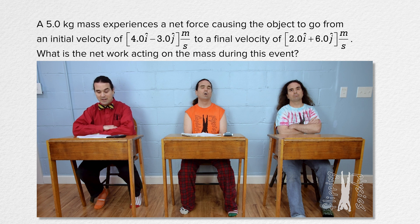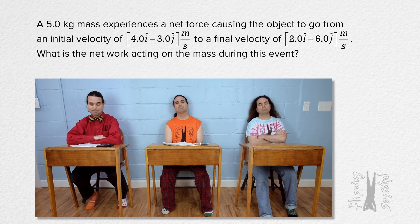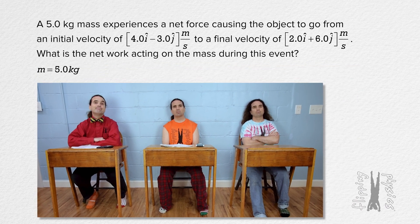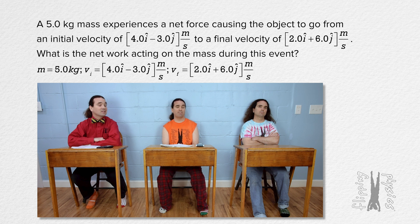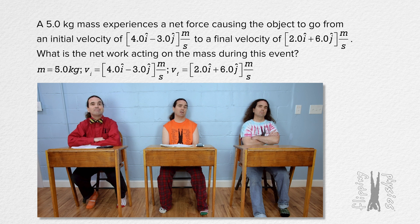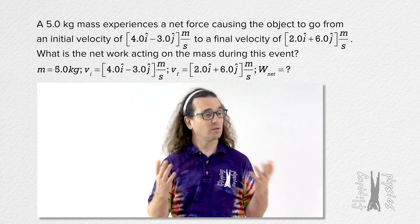What is the network acting on the mass during this event? Mass equals 5.0 kilograms. Velocity initial equals 4.0i minus 3.0j meters per second. Velocity final equals 2.0i plus 6.0j meters per second. And network equals question mark. Thank you both.